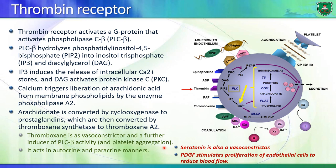Another vasoconstrictor important here is serotonin, also released from platelets. There is also platelet-derived growth factor, which is released and stimulates proliferation of endothelial cells reducing blood flow. So eventually you have slowing down of blood flow, allowing for platelets to accumulate and aggregate.